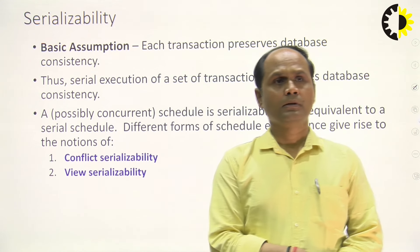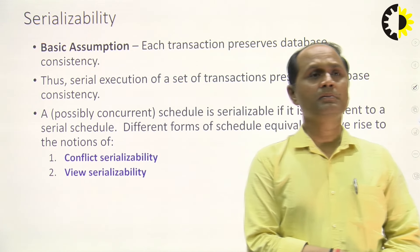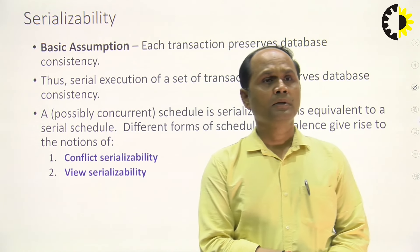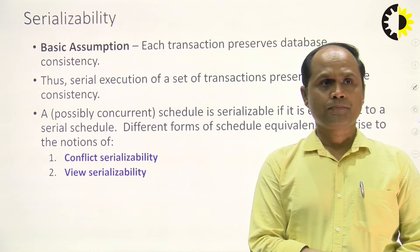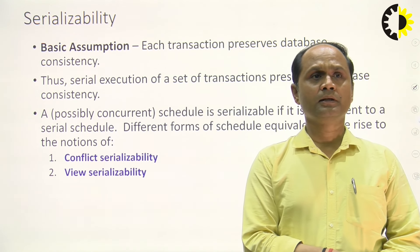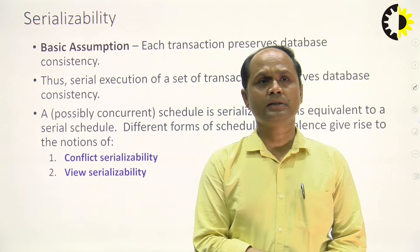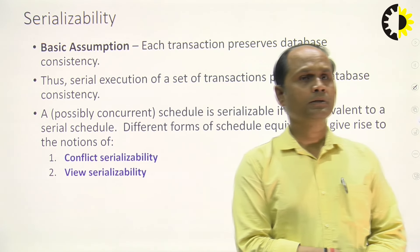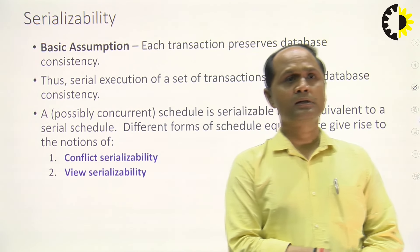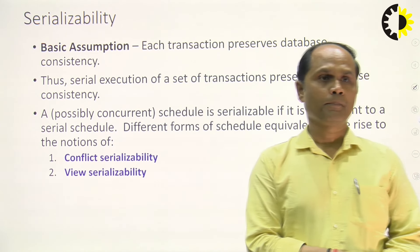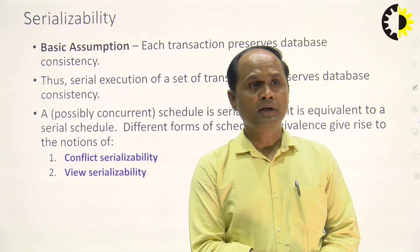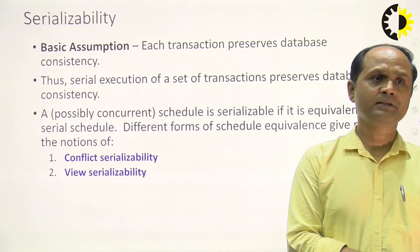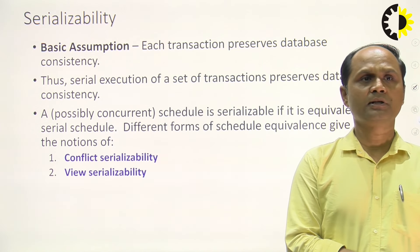What do we mean by a schedule? A schedule is called a serial schedule. If it is equivalent to a serial schedule, then it is called a serializable schedule. Serializability can be classified into two types: one is conflict serializability, and another is view serializability.